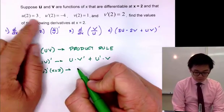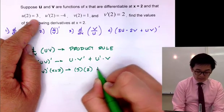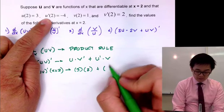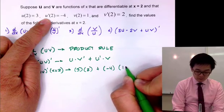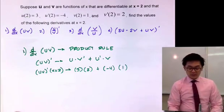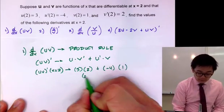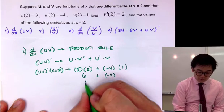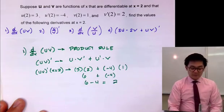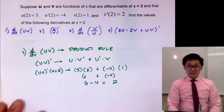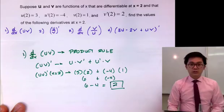Using the given values: u(2) = 3, v'(2) = 2, u'(2) = -4, and v(2) = 1. So we just ignore the number inside the parentheses and focus on the values of each function. We get 3 times 2 plus (-4) times 1, which is 6 plus negative 4, which is 6 minus 4, giving us 2. So the derivative of uv at x equal to 2 is simply 2.